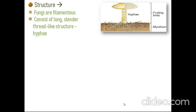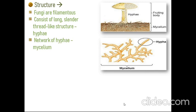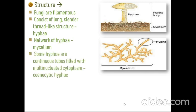The structure of fungi is filamentous, consisting of long slender thread-like structures known as hyphae. Many hyphae join and make a network-like structure known as mycelium. Some hyphae are continuous tubes filled with multinucleated cytoplasm — these are coenocytic hyphae. Others have septa or cross walls in their hyphae.